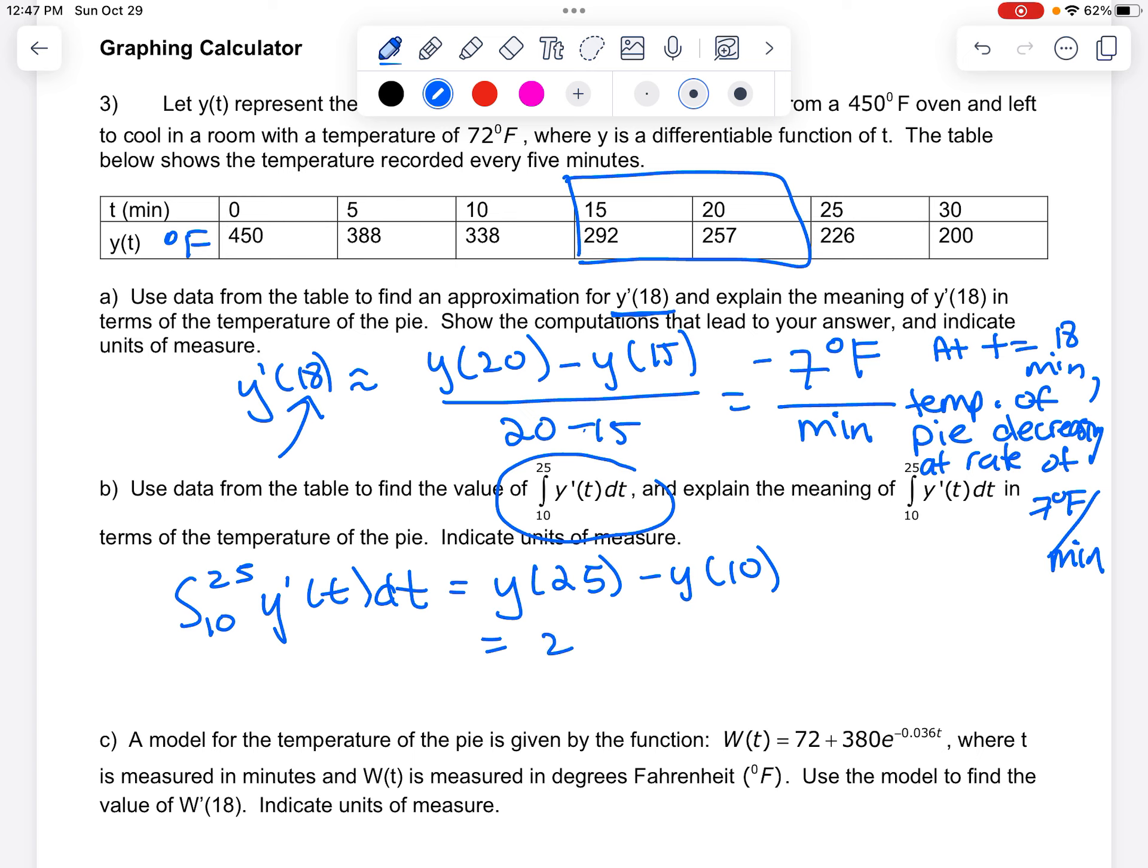What is y of 25? It's 226. y of 10 is 338, which gives me negative 112. Both of these are y values, which is talking about the temperature. So this is saying,